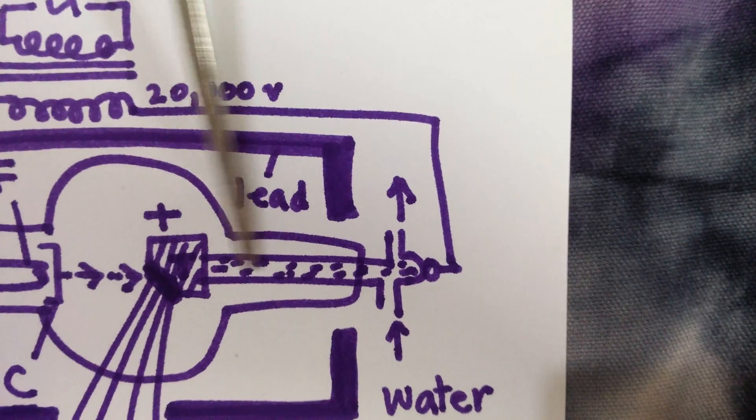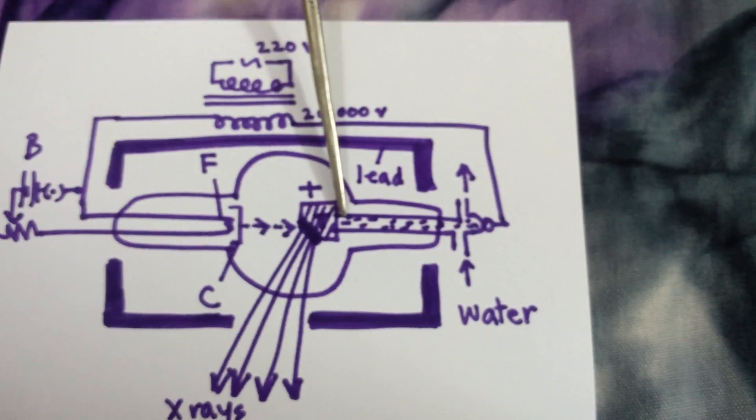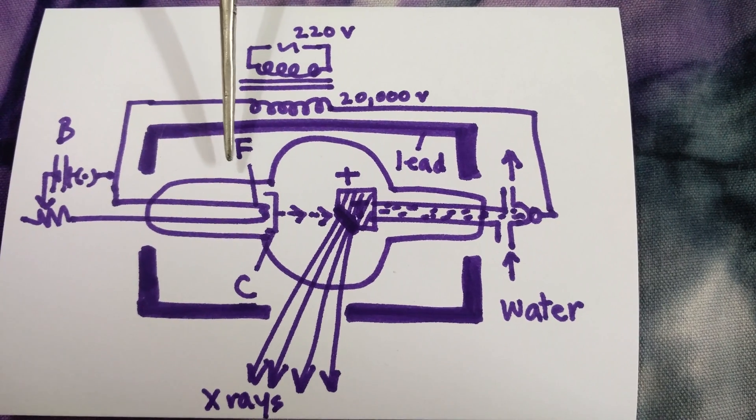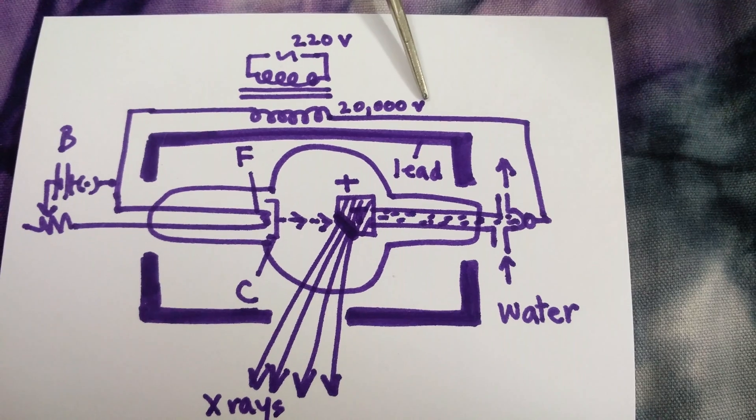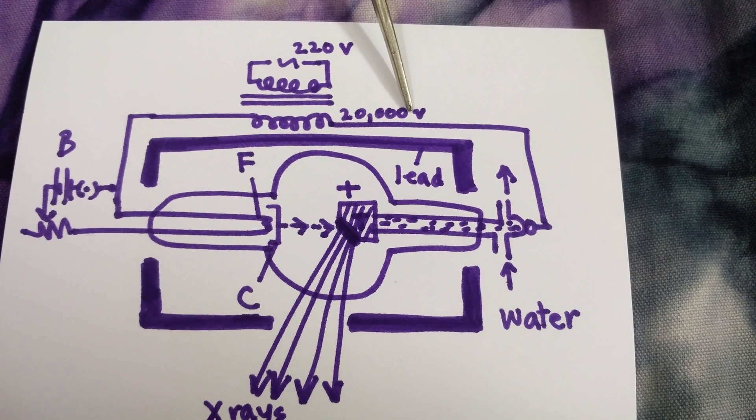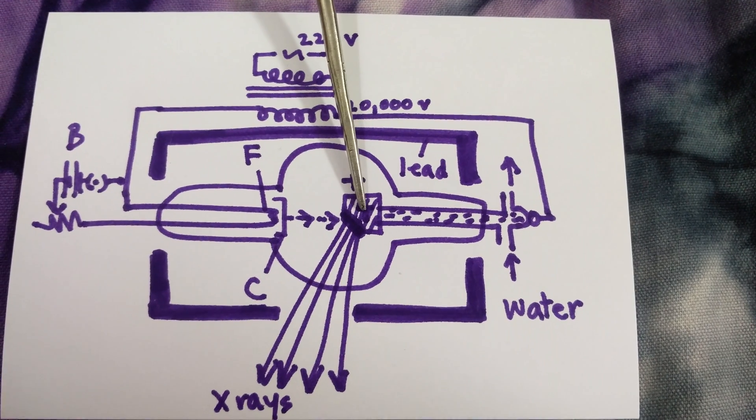Now we come to the working of the Coolidge tube and how it produces x-rays. When an alternating potential of about 2000 volts is applied between the filament F and the target T by means of a step-up transformer, electrons are emitted from the filament. They obtain very high speed and strike the target T.